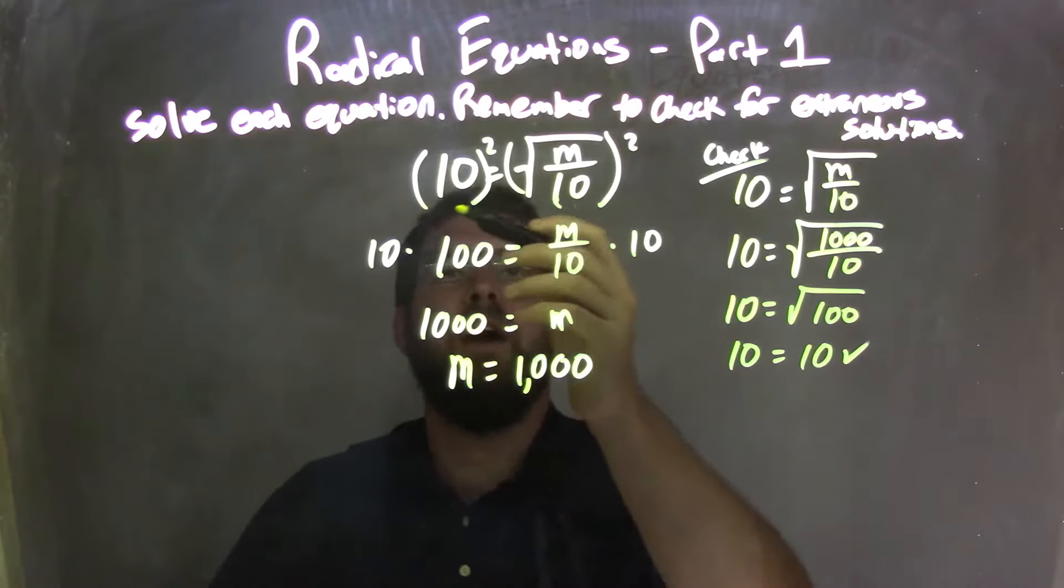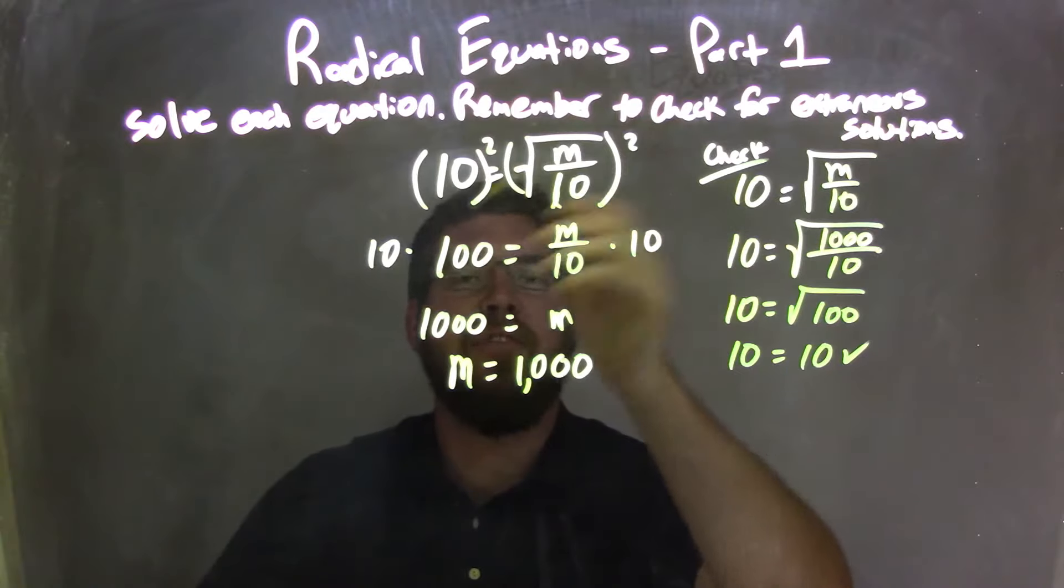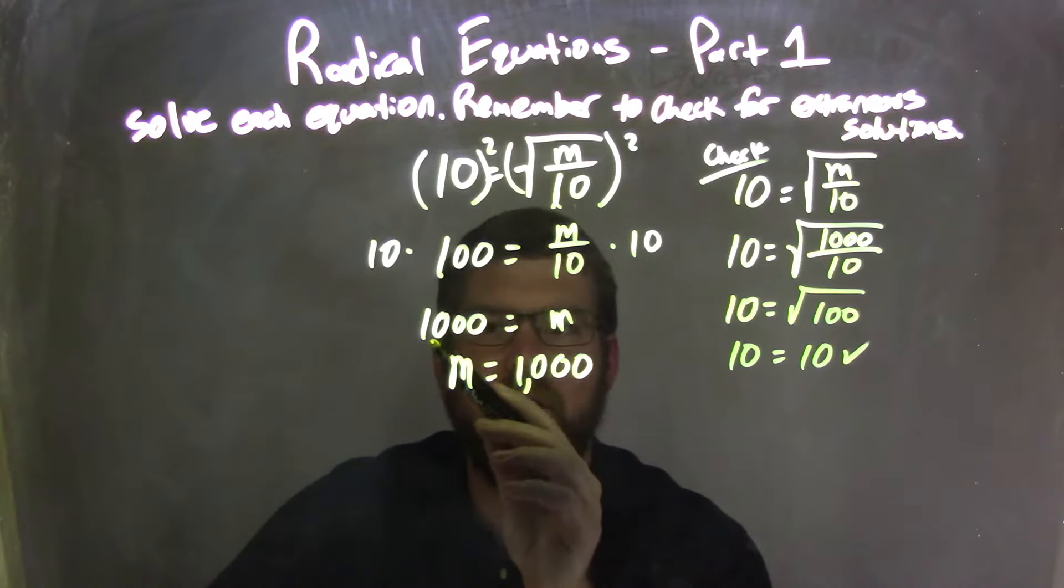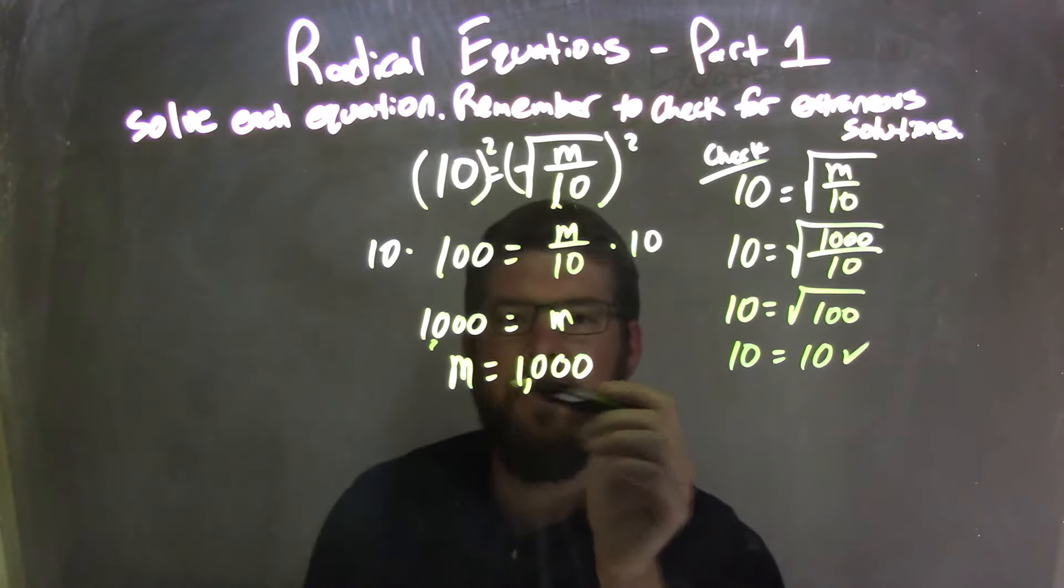So let's recap. We started with 10 equals the square root of m over 10. I then squared both sides to eliminate the square root, leaving me with 100 equals m over 10. Then I multiplied both sides by 10 to get m by itself. So I had 1,000 here equals m. We rewrote it, m equals 1,000.